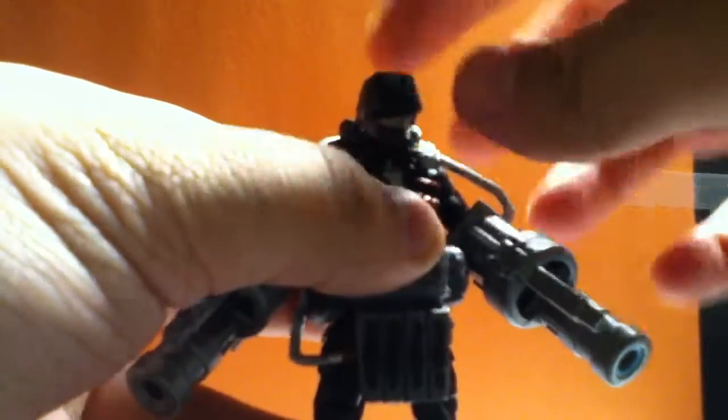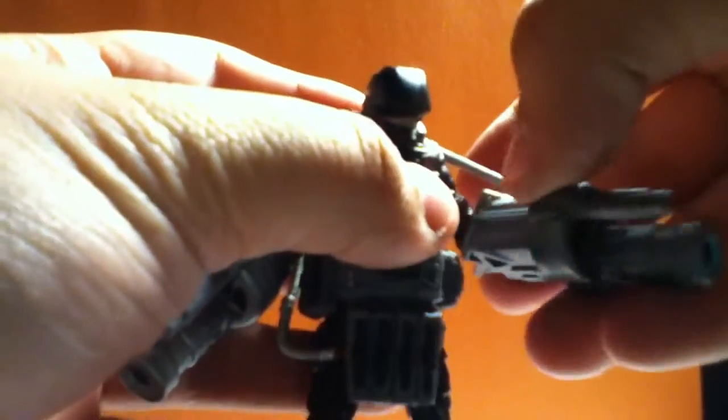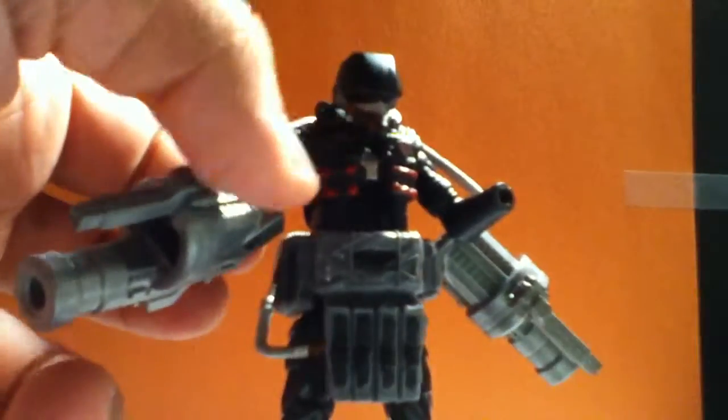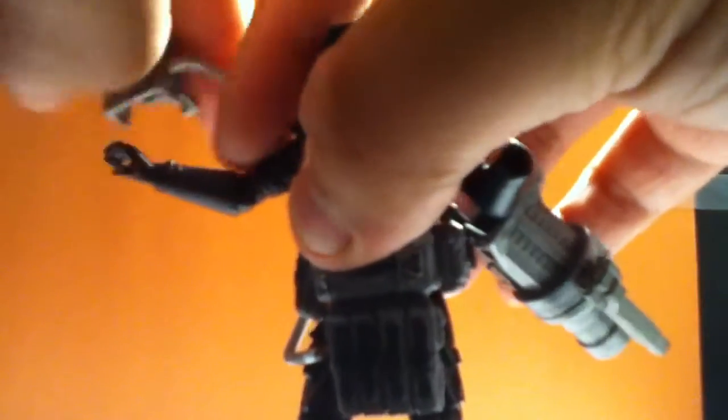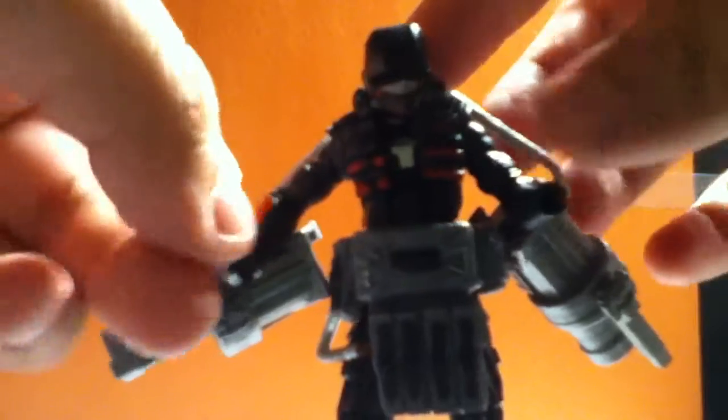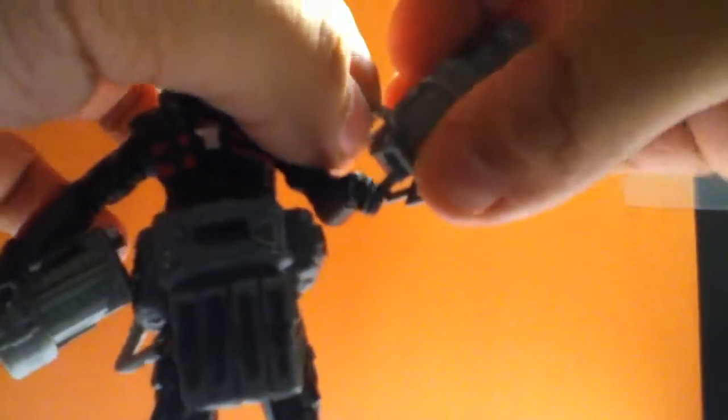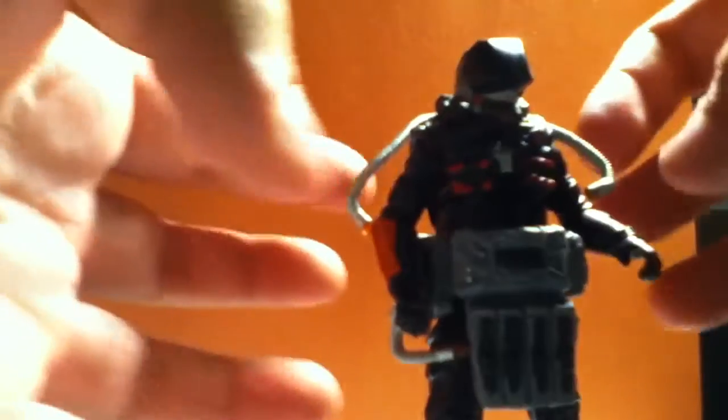And these are removable, as so, like that. Oh, his hand can pop off really easily. And these also aren't removable, just little tubes. So let's go over the articulation on this guy.